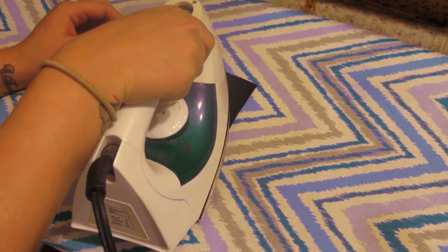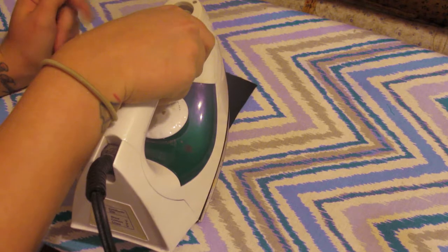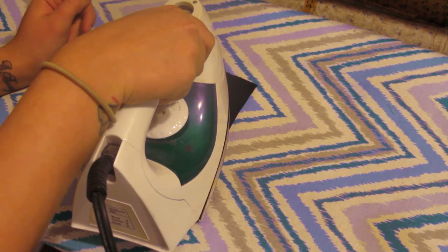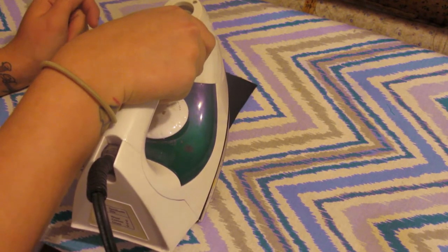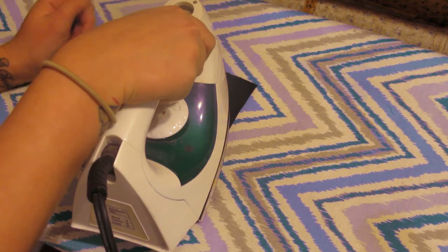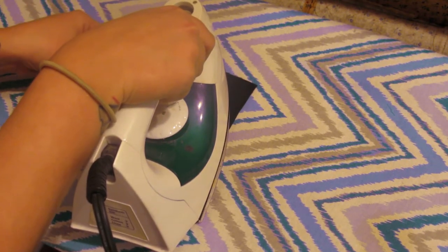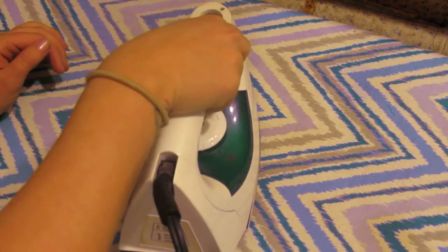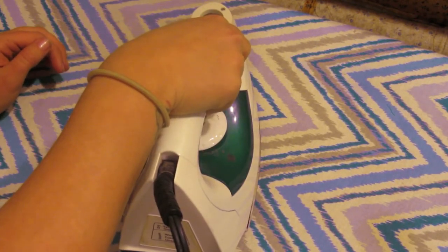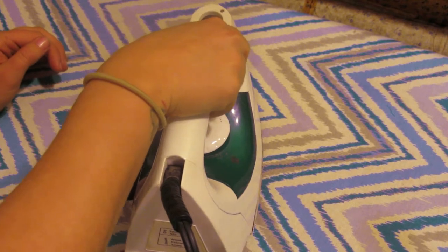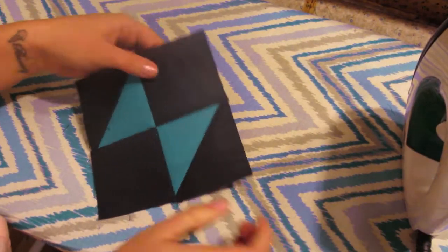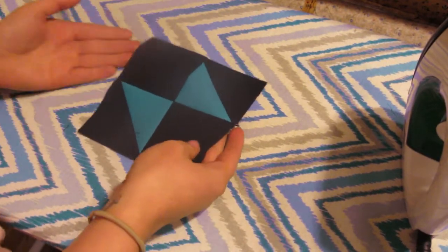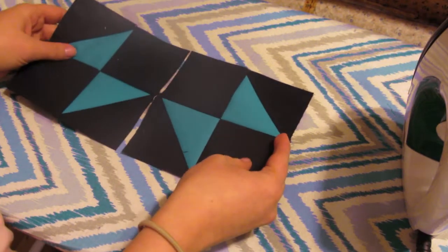But if you feel more comfortable just pressing it to the side, by all means go ahead and do that. I just find that pressing the seams open on this last one helps my block lie a little flatter. And in this quilt there's going to be so many seams that I'm just trying to find any way to make them lay a little flatter so it'll be a little easier to quilt. And there is your finished block.